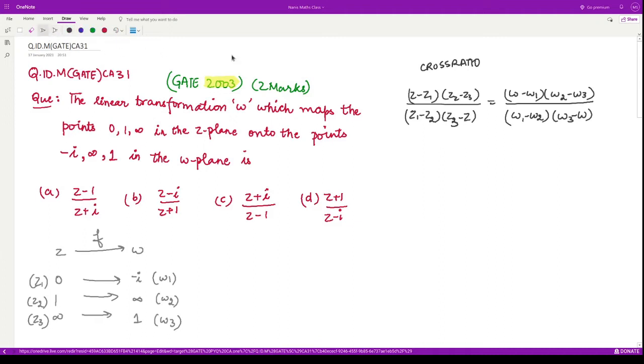By now you must have learned this formula to calculate a bilinear transformation. In this question we are given the points 0, 1, and infinity in the z-plane that map correspondingly to the points -i, infinity, and 1 in the w-plane. They are asking what is this transformation f, so we will use this formula.